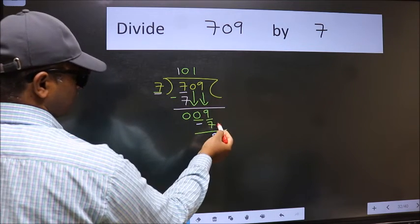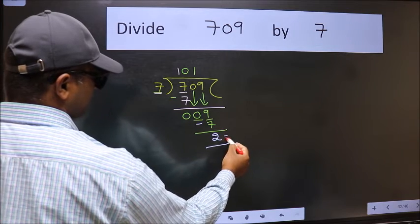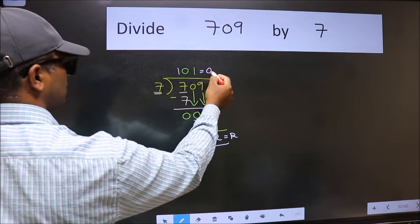No more numbers to bring down, so we stop here. This is our remainder and this is our quotient.